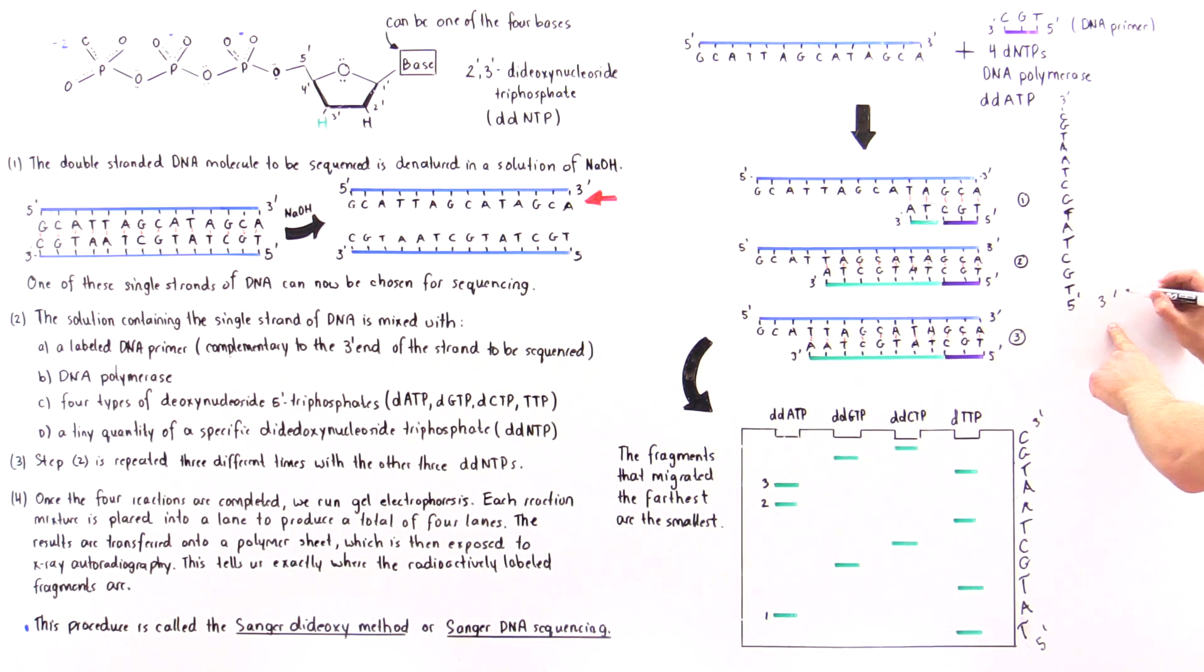So this is the three prime end. So this is A, this is CGAA, this is T, this is ACGAT, TACG, and that's the five prime end.